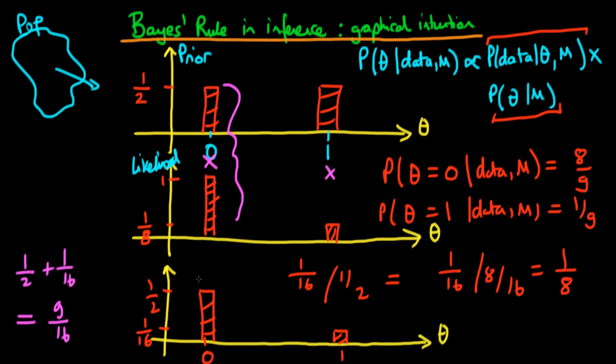So if we divide each of these bars by nine sixteenths, that amounts to increasing the height of each of these bars and then we'll get to the heights which we had before. So we'll get to a height of eight ninths for the case where theta is zero and the height here would be one ninth for the case when theta is equal to one.